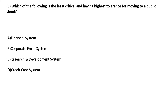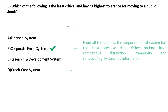Which of the following is the least critical and has the highest tolerance for moving to a public cloud? Out of all the options, the corporate email system is considered the least critical. Other options have competitive distinction, complexity, and sensitive or highly classified information.